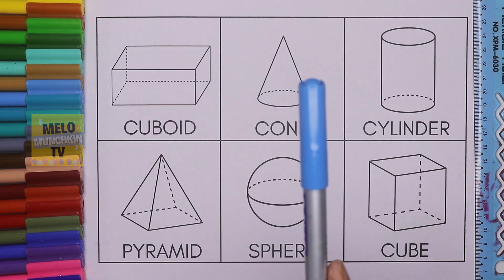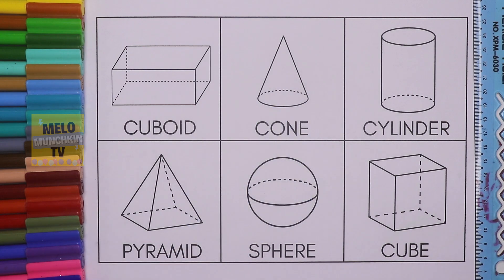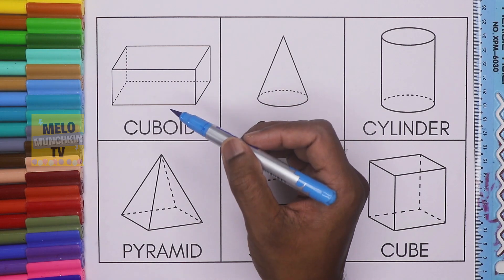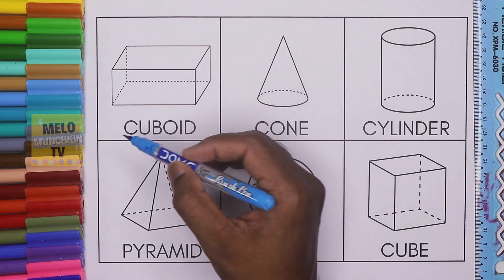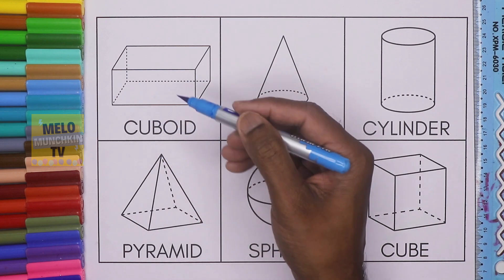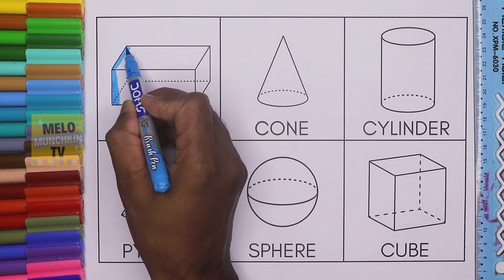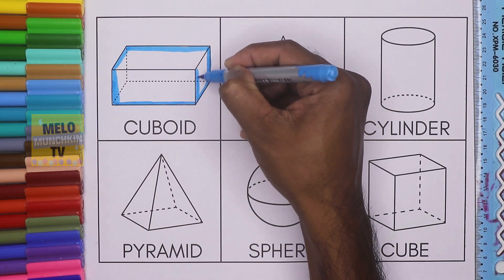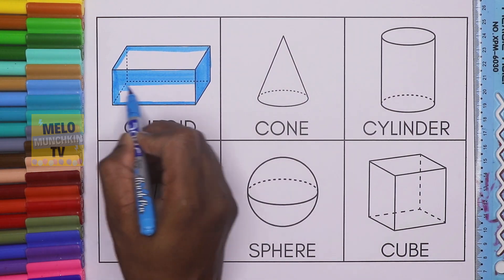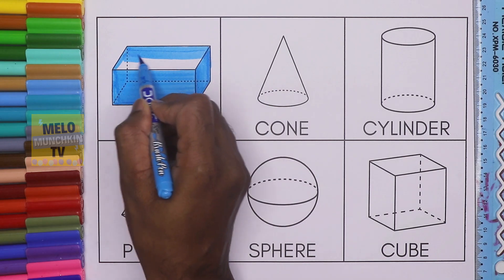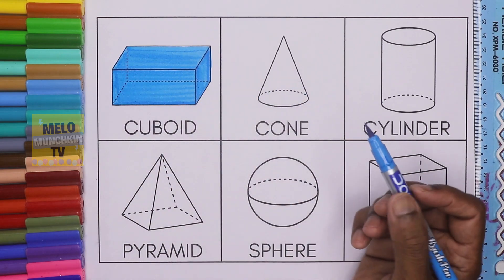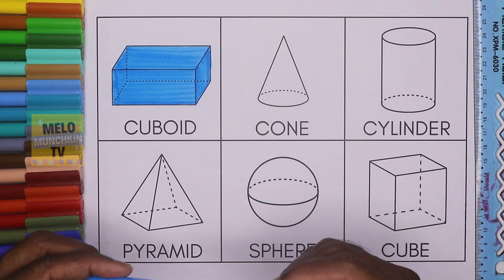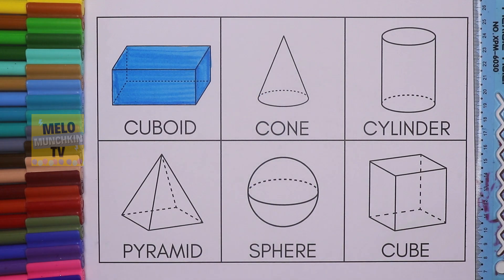For the first image, I'll take blue color — this is light blue color — to color the cuboid. This is a cuboid; it's the 3D image of a rectangle. So this is called cuboid. C-U-B-O-I-D, cuboid, and this one is light blue color.